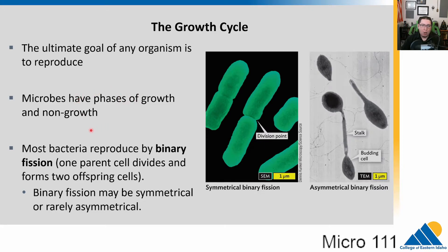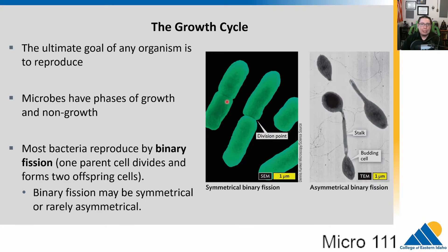That division is called binary fission — binary means two, fission means splitting apart. One parental cell divides into two identical offspring cells. Binary fission can be symmetrical, where they are identical, or rarely asymmetrical, where a stalk forms in a budding cell. Generally it's symmetrical: we start with one and end up with two identical copies. Sometimes it's called clonal growth because of that.